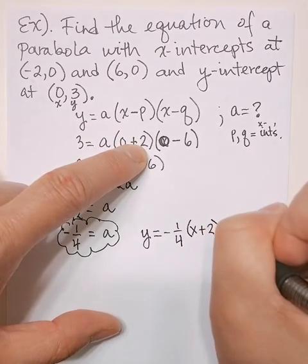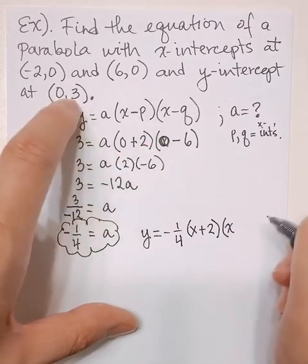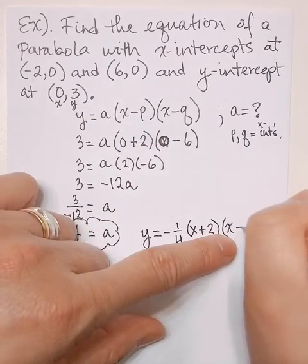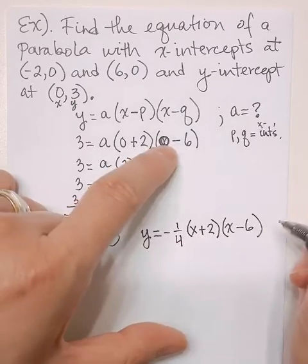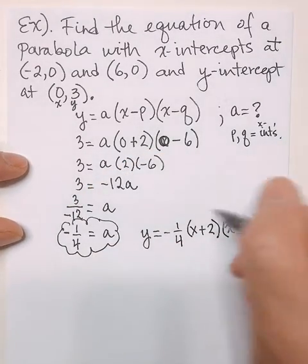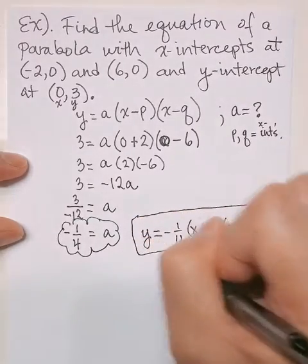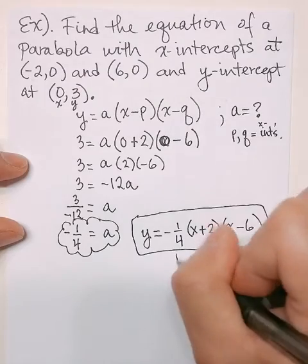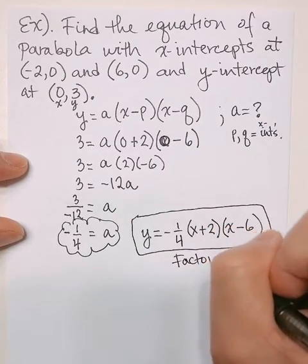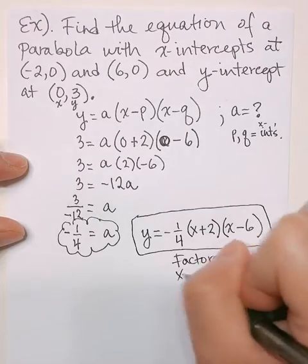...and then instead of 0, you put x in there, minus 6. So x minus 6. This is called the factored form or x-intercept form, and today we're going to stop here.